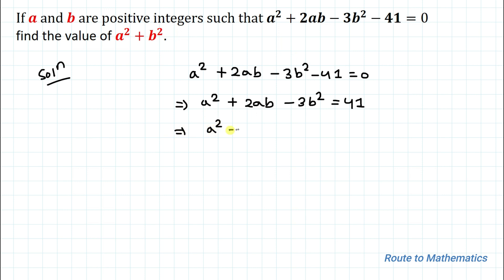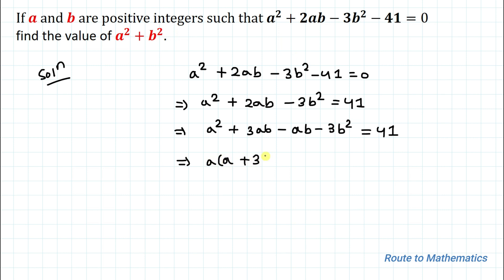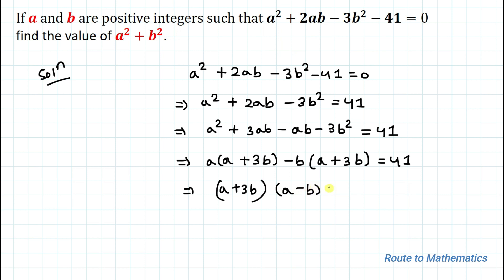We can write 2ab as 3ab - ab, so we have a² + 3ab - ab - 3b² = 41. Taking a common from the first two terms gives a(a + 3b), and taking -b common from the last two terms gives -b(a + 3b), so we have (a + 3b)(a - b) = 41.